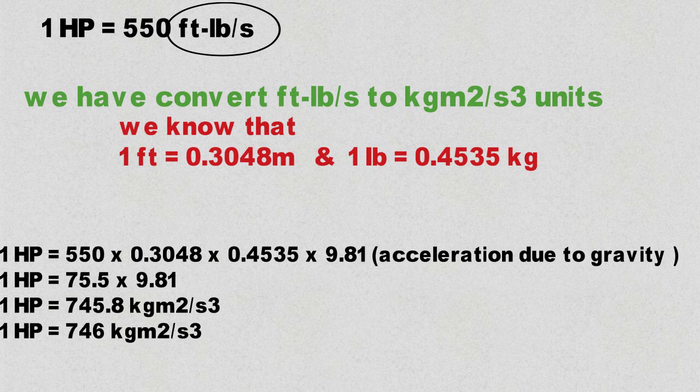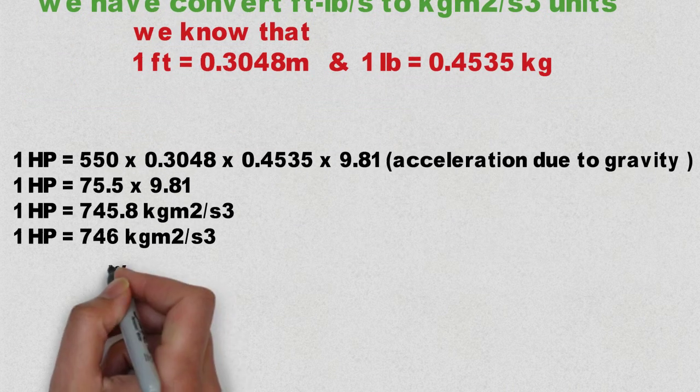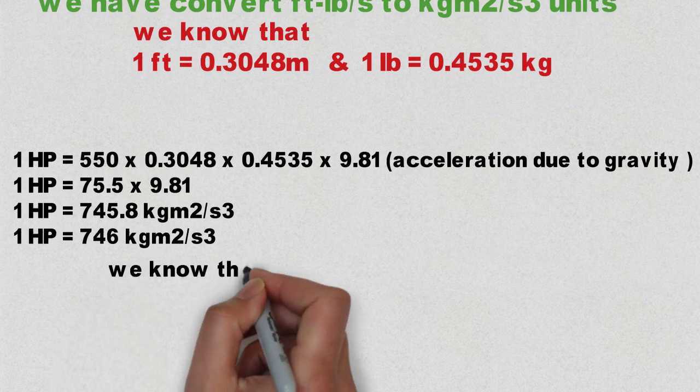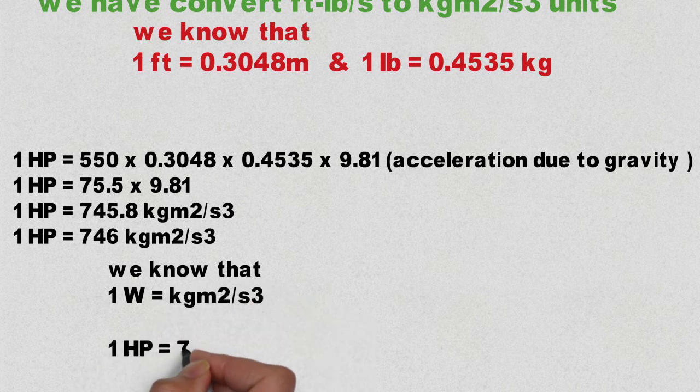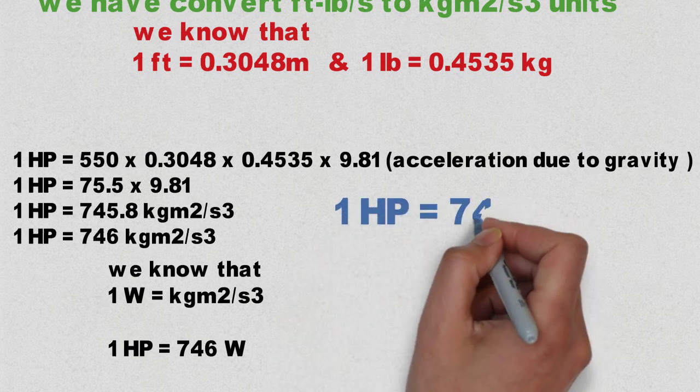Therefore, on multiplying this we get approximately 745.8, and rounding off the value will be 746. Now we can clearly see that both have same units, so we replace the unit with watts, and there we get one horsepower equals 746 watts.